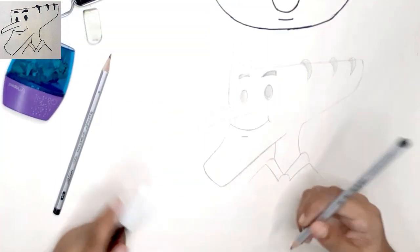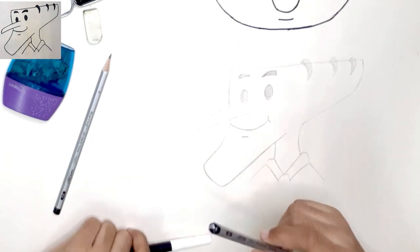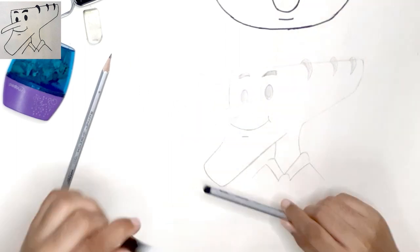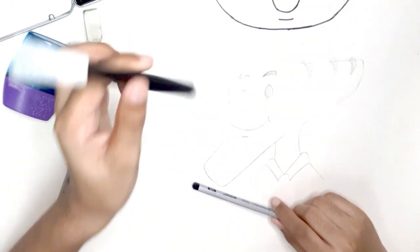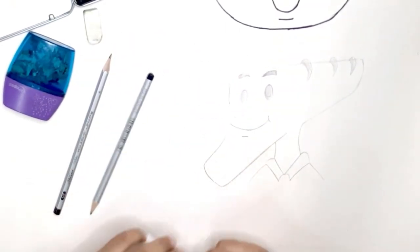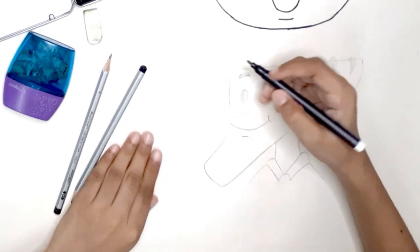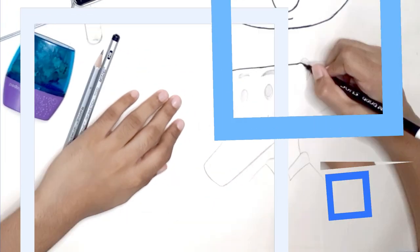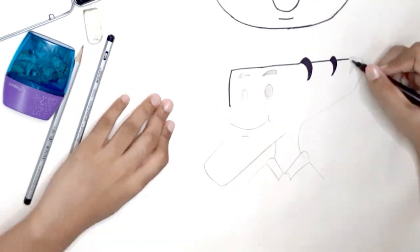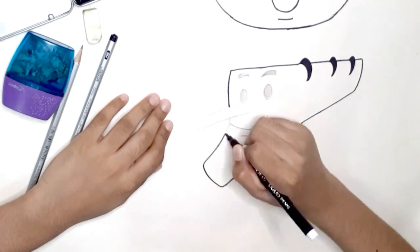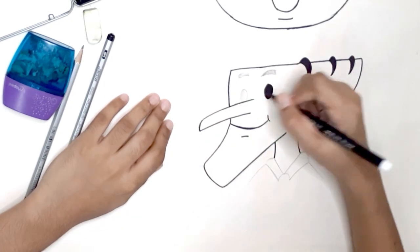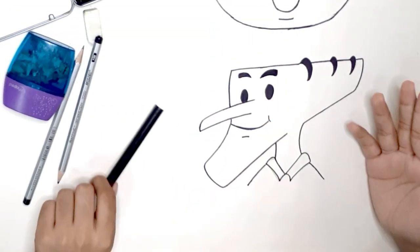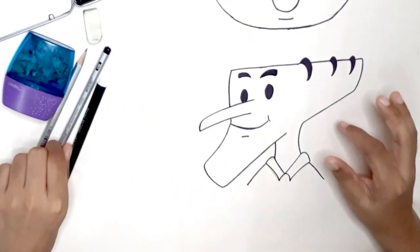You can do the darkening. You can either use an HB pencil to darken it or a black sketch pen. I prefer to use the black sketch pen since it gives a more cartoonish look. So let's do the darkening. Okay, so now we are done with darkening the lines using sketch pen.